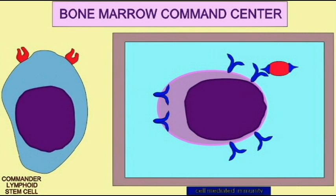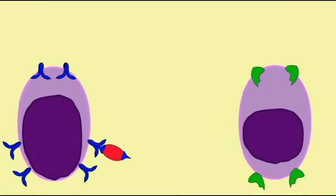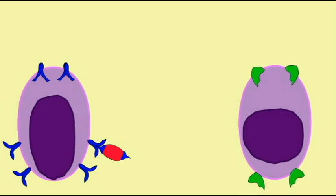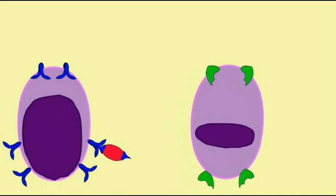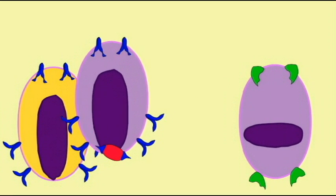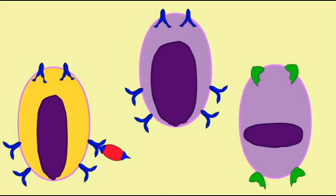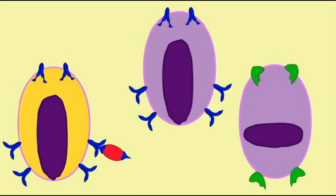B cell, I notice you bound an antigen, but you're not dividing and you're not making antibodies. What are you doing? What are you waiting for? I cannot divide because no one has given me permission to divide. B cell, I give you permission to divide and start the humoral response. Now that I have permission from the T helper cell, I can divide and plasma cells can start to make antibodies.